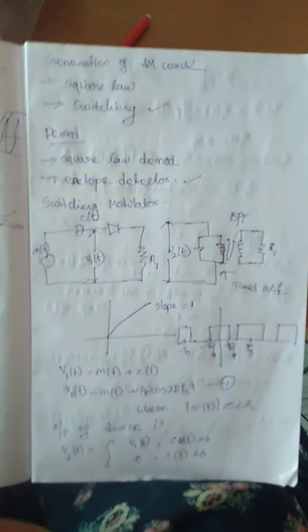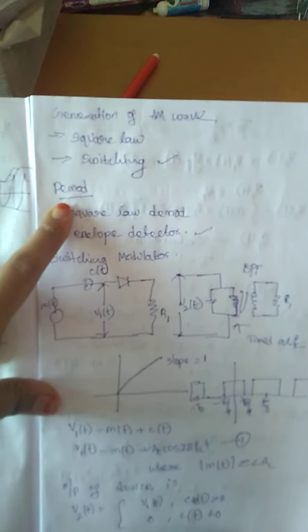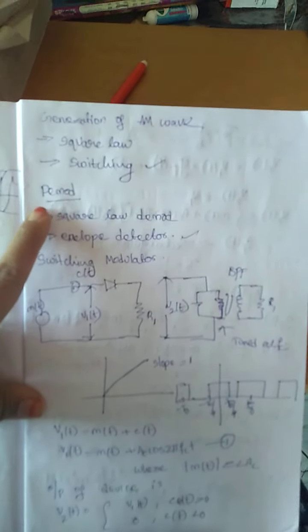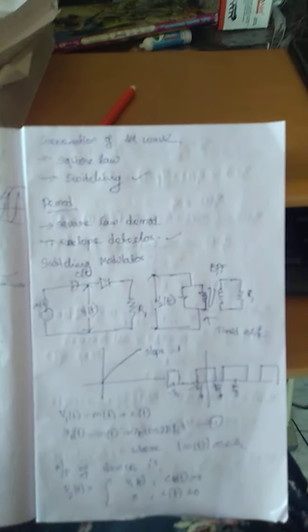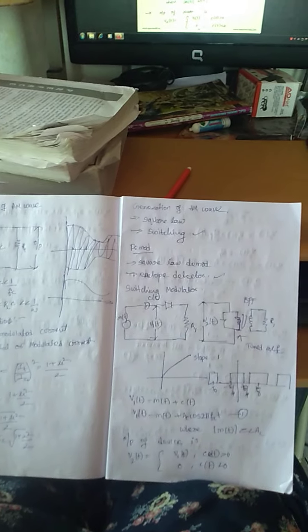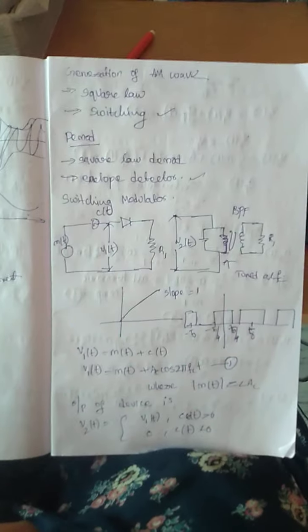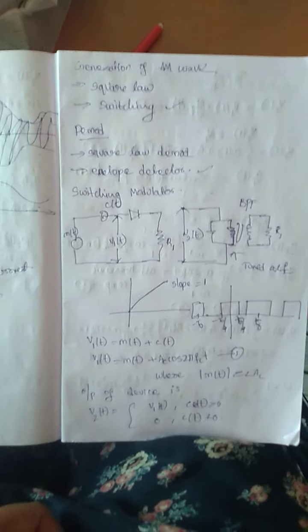Now we will see the generation of an AM wave. There are two methods to generate an AM wave: the first is a square law modulator and the second is a switching modulator. For demodulation, there is square law demodulation and an envelope detector. Demodulation is the process of converting the modulated signal back into the original message signal. Square law is not in your syllabus, so we will go with the switching modulator.